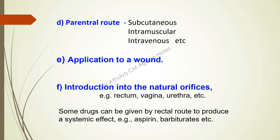Some drugs can be given by the rectal route to produce a systemic effect — for example, aspirin, barbiturates, etc. Even though they are given via the rectal route, they can act in a systemic way.